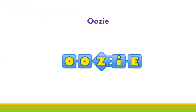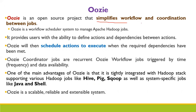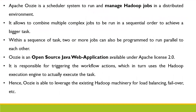The next component is Uzi. It is an open source project that simplifies the workflow and coordination between jobs. It is a workflow scheduler system to manage Apache Hadoop jobs — providing coordination between jobs, scheduled tasks, and managing when to execute a particular action and its dependencies. Uzi is tightly integrated with Hadoop, supporting Hive, Pig, Sqoop, and specific jobs like Java and Shell. It can run and manage Hadoop jobs in a distributed environment, allowing multiple complex jobs to be done in sequential order to achieve a bigger task.